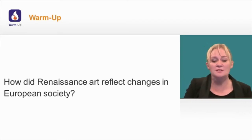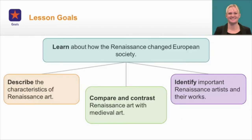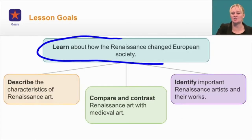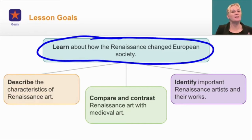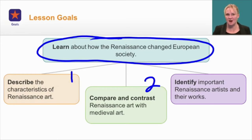Today we're going to talk about how Renaissance art reflected changes in European society. We're going to break it down into three parts: first, we'll describe the characteristics of Renaissance art; second, we'll compare Renaissance art with medieval art; and finally, we'll identify important Renaissance artists and their works.